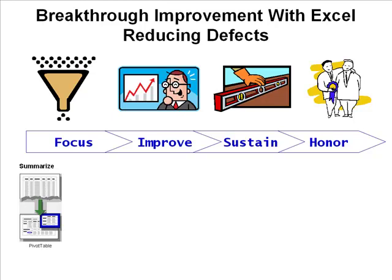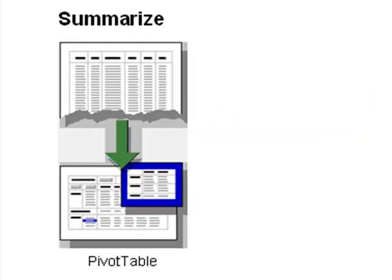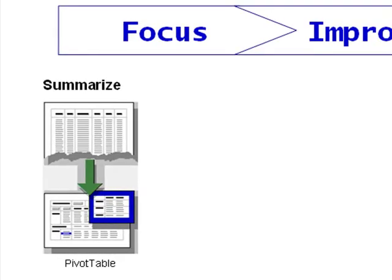The first step is we want to use some tools in Excel to summarize data. Very often we find that there are lots of line-by-line, ginormous data sets in companies. And we can use Excel pivot tables to take that complicated bunch of stuff and summarize it into something we can actually chart, plot, and so on.